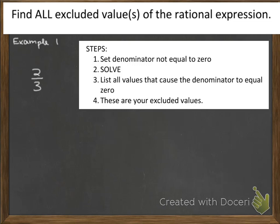So the first step is to set the denominator equal to 0. Well, what is the denominator in this problem? The denominator is 3. If I set 3 equal to 0, then I need to solve. Well, notice there's not really any way to solve this because we don't have a variable. 3 is never going to be equal to 0.